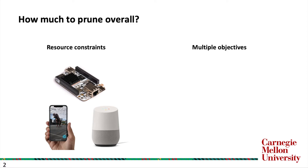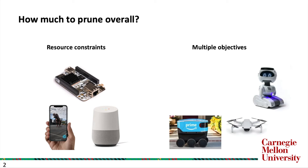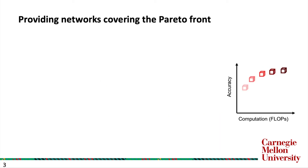On the other hand, if we were to consider a multi-objective setting — for example, optimizing the performance of an embodied AI agent, where their performance is characterized by their response time, working duration, and perception accuracy — in this case, we do not know ahead of time how much to prune overall to result in the best trade-off. As a result, we advocate developing filter pruning algorithms that provide pruned networks that cover the Pareto front.